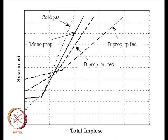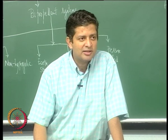Beyond a certain impulse level, the system weight of a pressure fed system is much higher than a pump fed system. At 10⁵ N·s total impulse, a turbo pump fed system might weigh around 10,000 kg whereas a pressure fed system could be 10⁷ to 10⁸ kg equivalent. This graph gives an indication of which system to use per requirement: know your impulse from the thrust-time curve, and choose the appropriate system. We will look at liquid propellant systems in more detail in the next class.